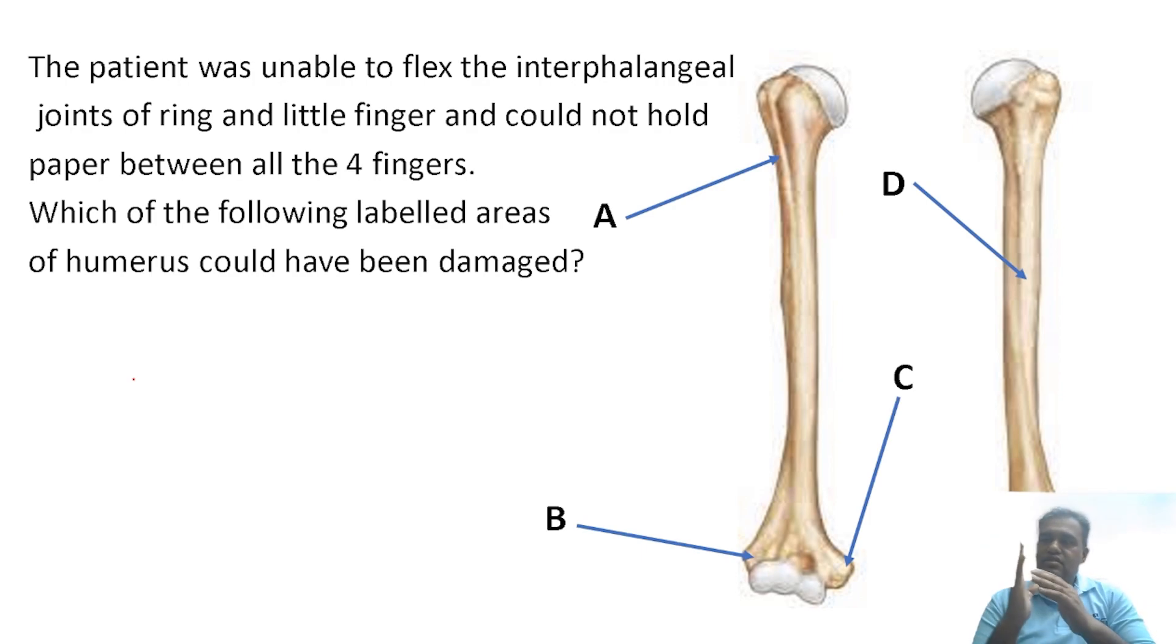Unable to flex the IP joints of these two fingers - we know that FDS and FDP go to these fingers, but FDP is a hybrid muscle and the medial half of FDP is supplied by the ulnar nerve. Plus, the paper is slipping away from between the fingers, meaning the palmar interossei which cause adduction of fingers are not working. Both are supplied by the ulnar nerve, but the question has a catch.